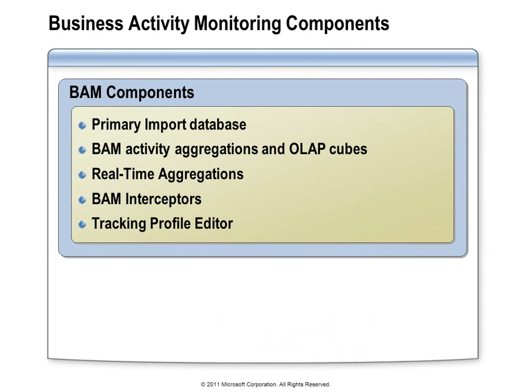BAM was designed to collect business activity data in real time without impacting the performance of a BizTalk group that is processing a high volume of messages. Central to all of this is the BAM primary import database, which serves as the rendezvous point for all of the business activity data being collected. In some cases, such as with orchestrations, the BAM data is first written to the message box database, and then transferred to the BAM primary import database by a service known as the BAM event bus service, also known as the tracking data and decode service. You can actually view that data in real time, provided that option was enabled when the business analyst defined which data they wanted to collect.